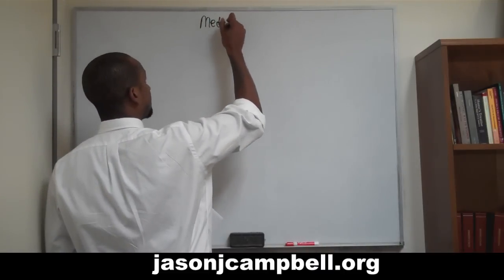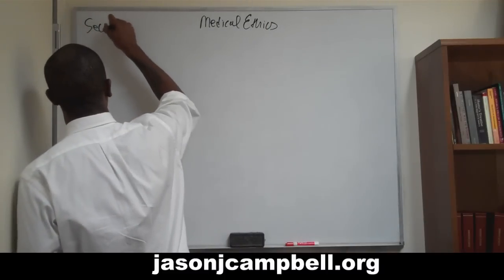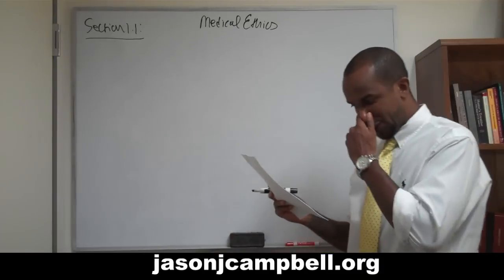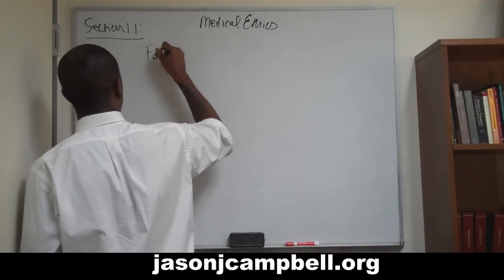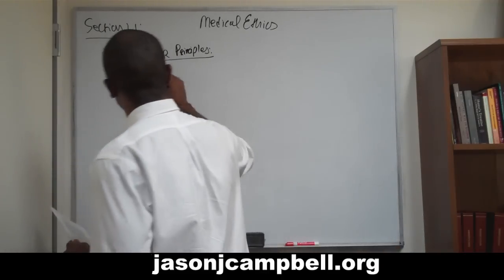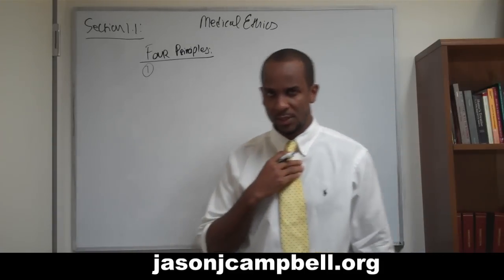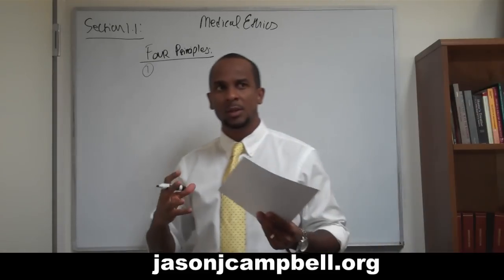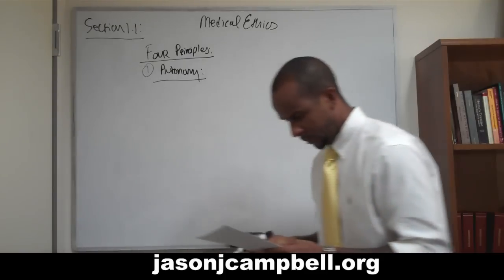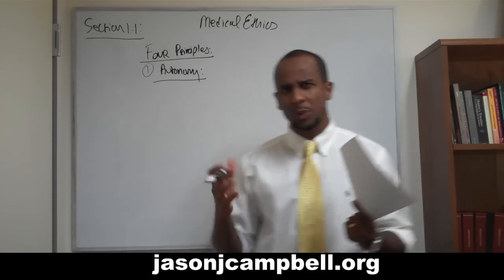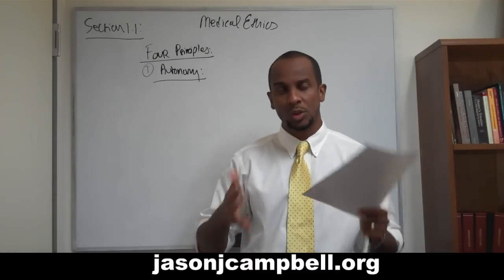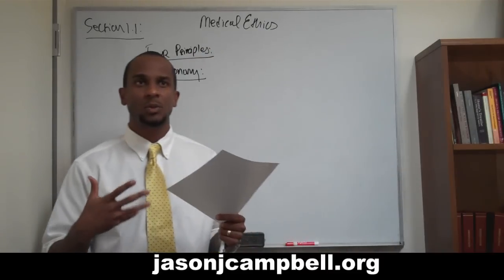This is medical ethics, section 1.1, a discussion on the four principles of medical ethics. The first principle we're going to discuss is autonomy. This is a pretty basic idea. Autonomy, in the colloquial sense, refers to the preservation of an individual agent's ability to act in the world, to choose, to make decisions. An autonomous individual is an individual that acts freely.